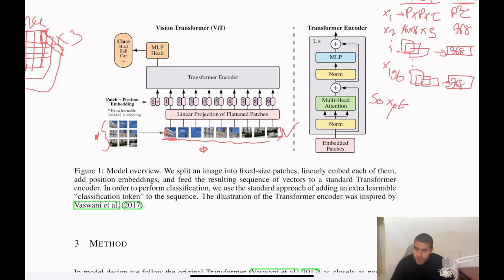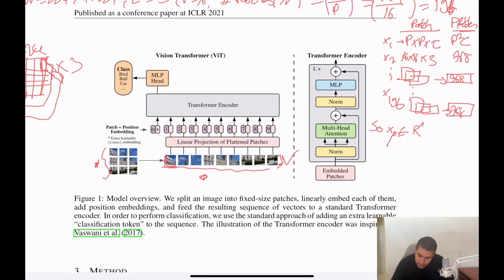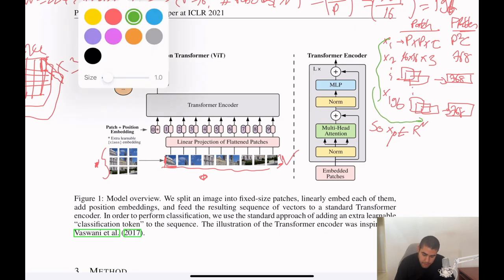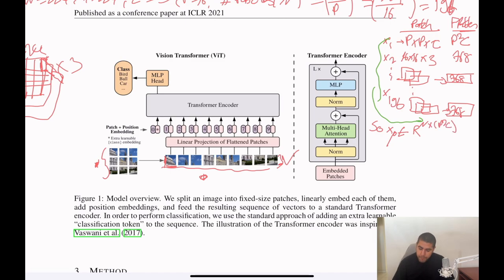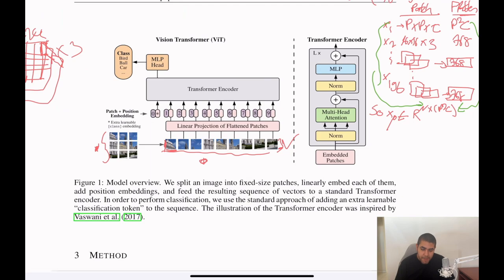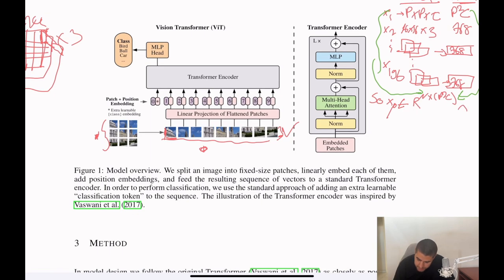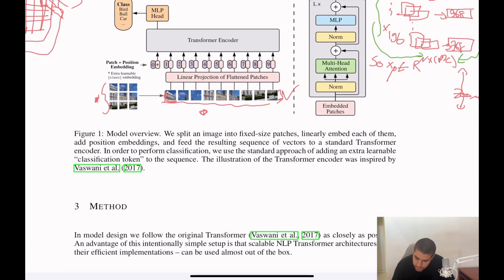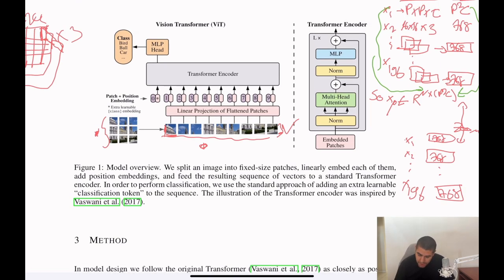So we can come up with a formula like this: for Xp is in the dimensions of n, which is the number of patches, to P squared times C, which is the dimensions of the flattened vector. To better see how each patch and the vectors look like, we can just zoom in here and show it like this: X1, X2, to X196, and the vector of 768. So this is how the linear projection of flattened patches look like, and what they do, how it works.